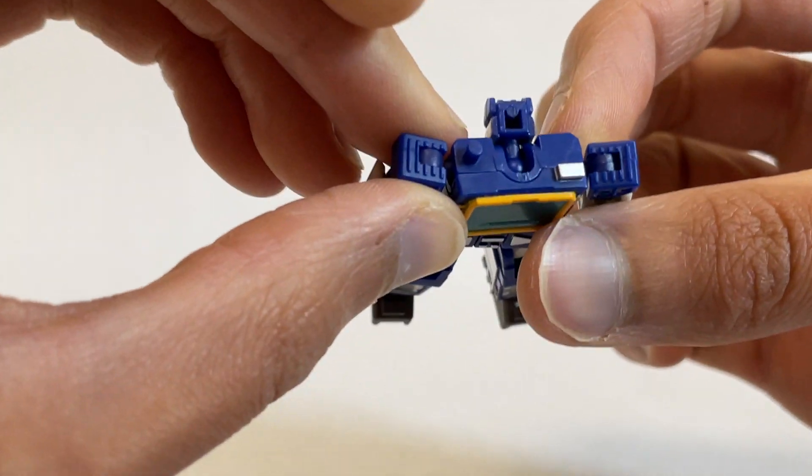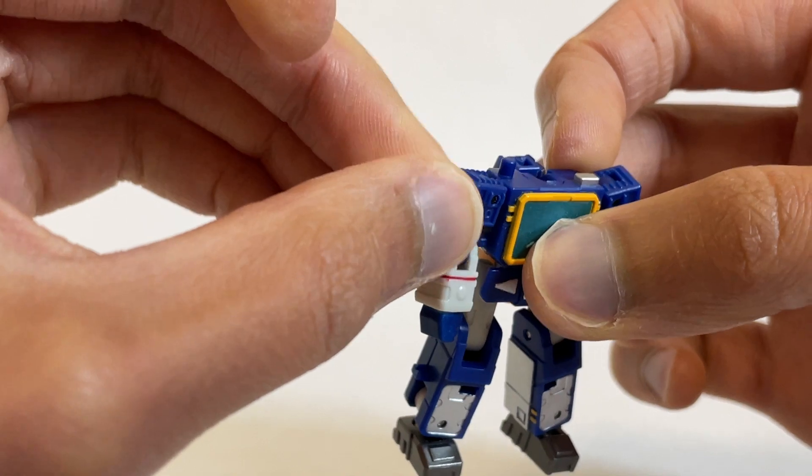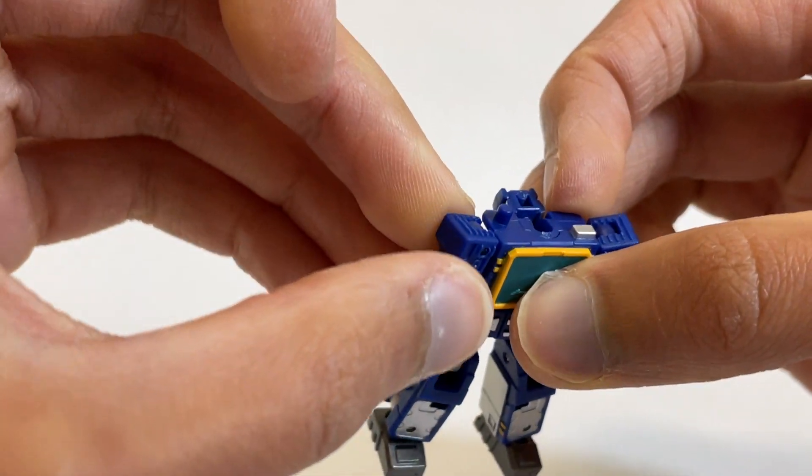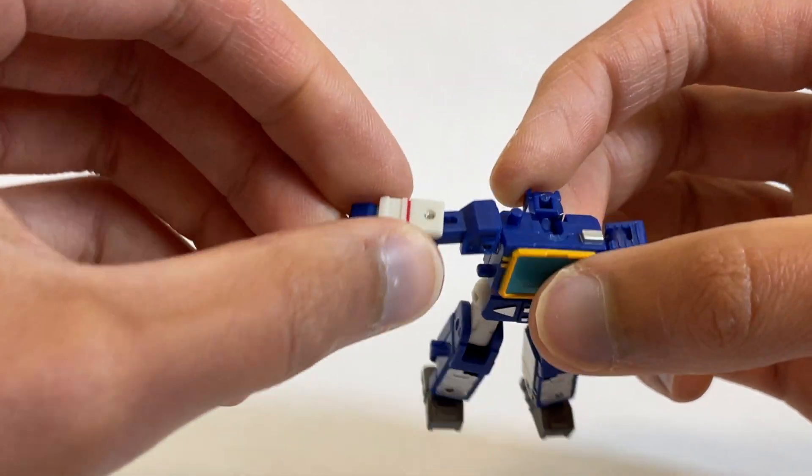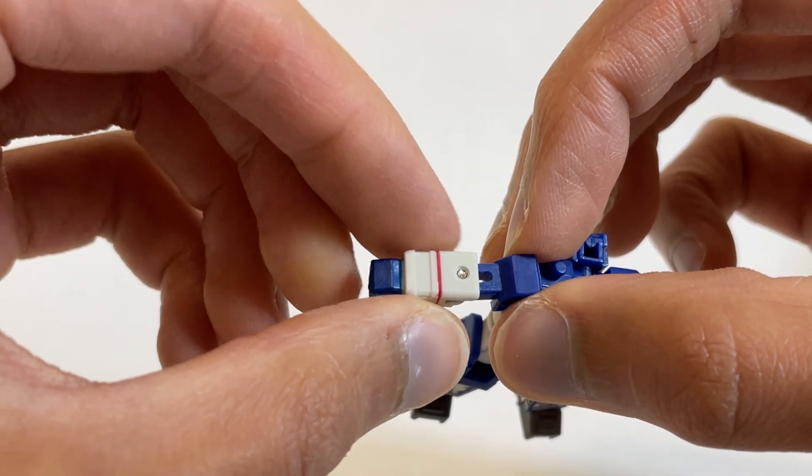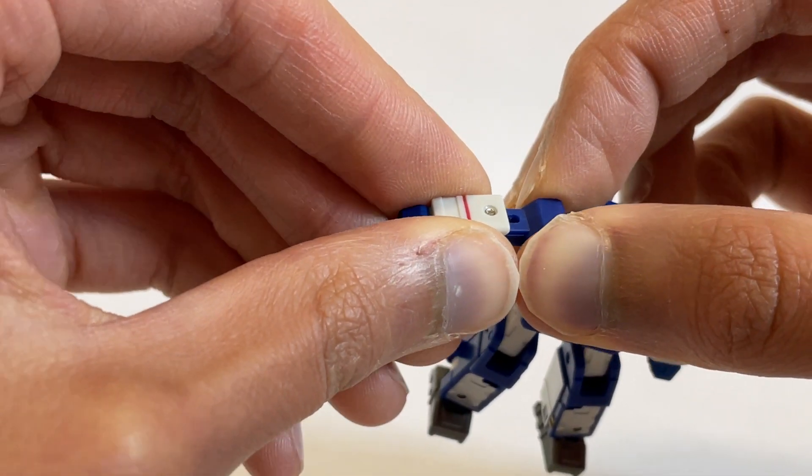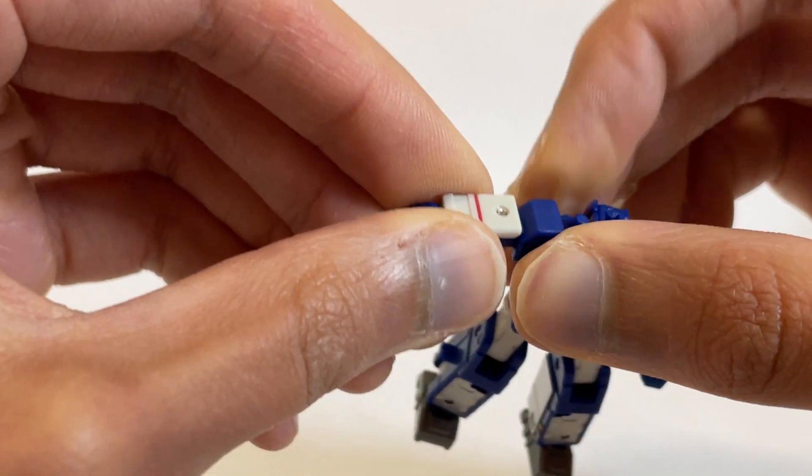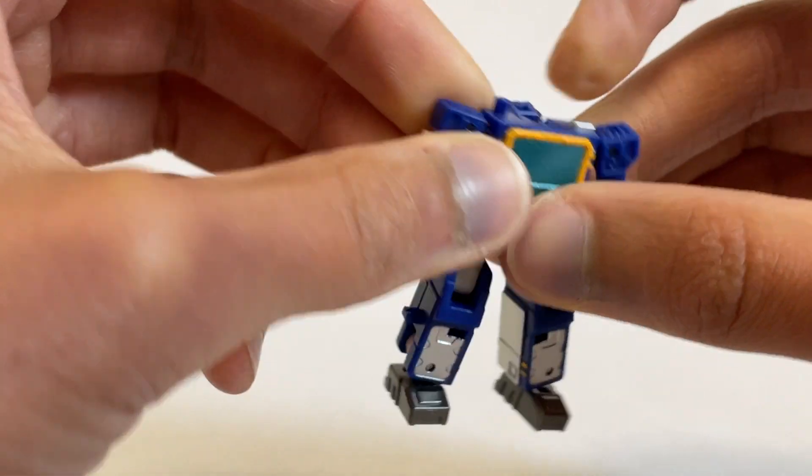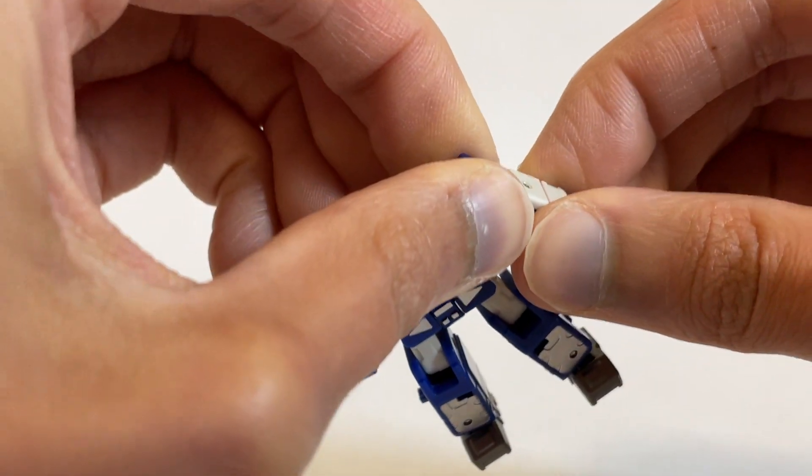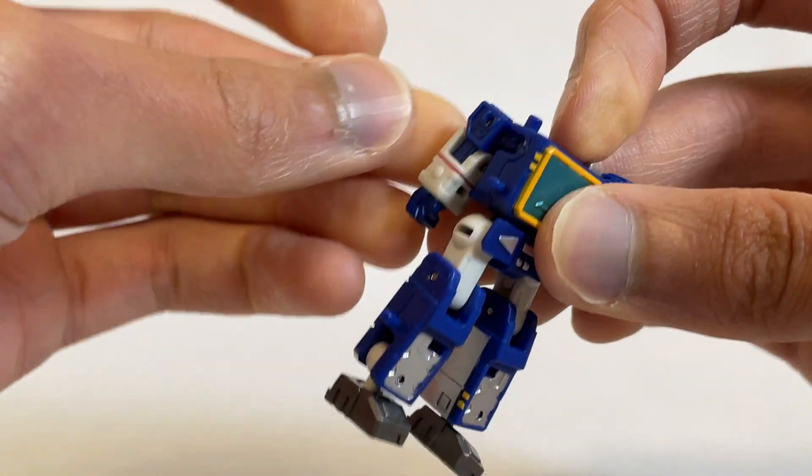And then in robot mode, he does kind of have this reverse joint here, which you can almost use as like a half butterfly joint. But before we do that, there actually is a slider here on this guy, which Dr. Wu has made use of before with Optimus Prime and Optimus's legs. And so this actually just unclicks from that lower joint, and then clicks up into the upper joint. And we do that on both sides. So unclick it from the bottom joint, and then it just clicks up into the top joint. Very well done. Works flawlessly.